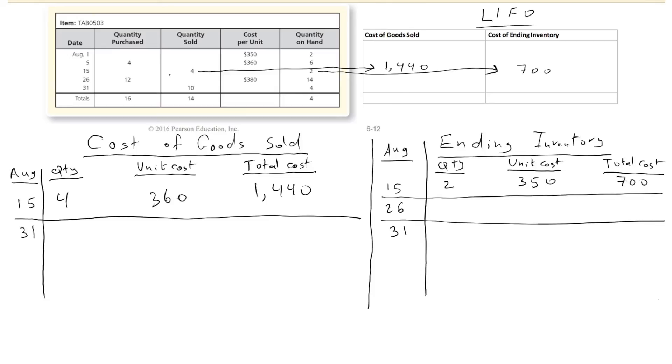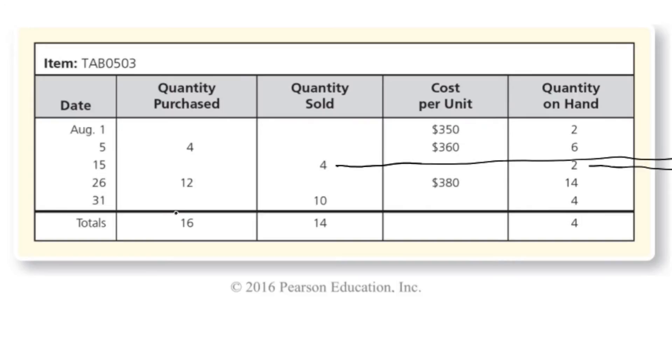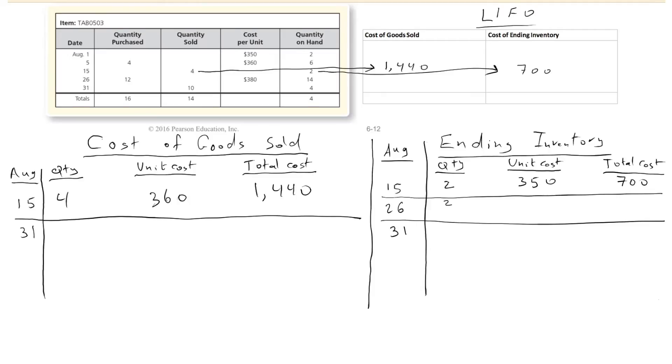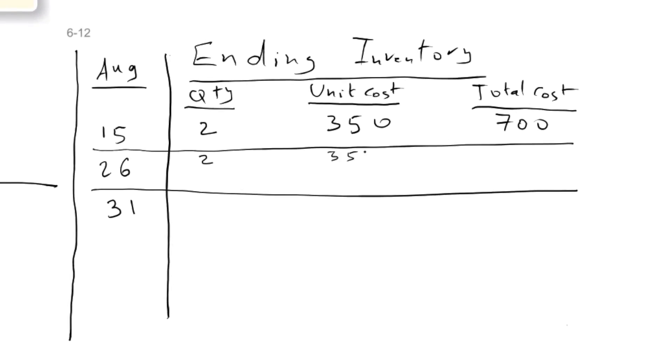Now let's look at the August 26th. We did not sell anything, but we did a purchase on that day. So we have to add those purchases to the ending inventory, to the cost of ending inventory. So we purchased 12 units for $380 each. So on August 26th, I will say that I still have those two units from August 15th, so I'm just going to carry over those two units from here to here, $350 each. Those will be multiplied by each other, and I had the 12 units that I purchased on the 26th, so those will be $380 each. If we do our multiplication, we will get $5,260.